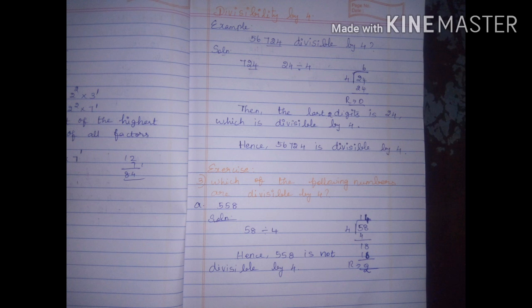Okay students, let's look at an example sum. In the book, page number 102: is 56724 divisible by 4? We take the last two digits, which are 24. 24 divided by 4 gives remainder 0. Hence, the number is divisible by 4. The last two digits 24 are divisible by 4, hence 56724 is divisible by 4.